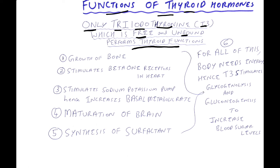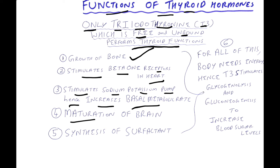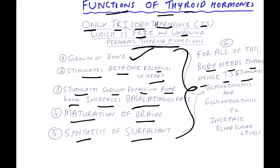Functions of thyroid hormones: Only free and unbound triiodothyronine (T3) performs thyroid functions, which include growth of bone, stimulation of beta-1 receptors in the heart, stimulation of the sodium-potassium pump (hence increasing basal metabolic rate), maturation of the brain, and synthesis of surfactant.